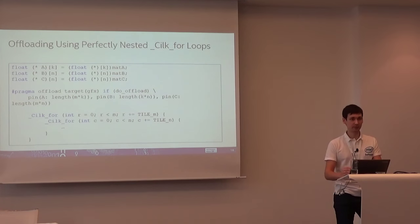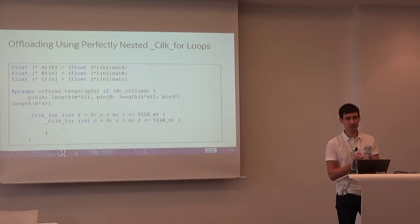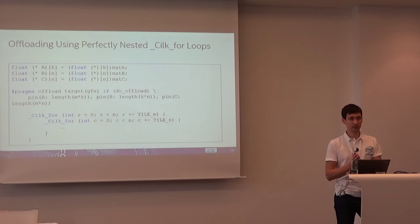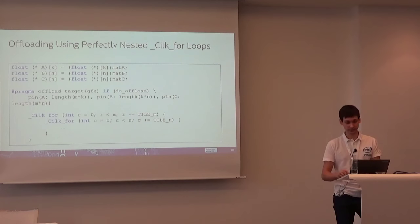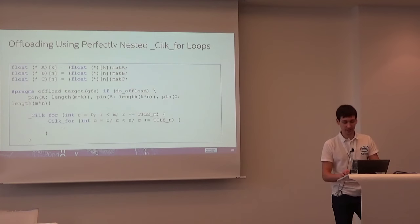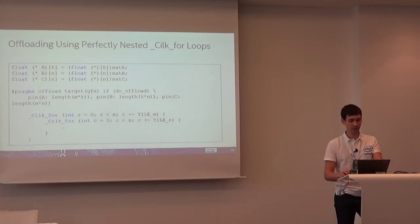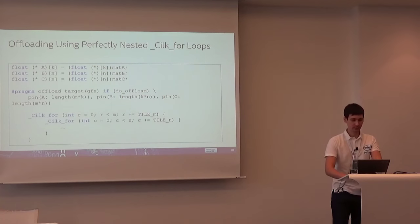Here is an example with perfectly nested cilk_for loops. The compiler will collapse these loops and we have a two-dimensional iteration space. Each thread will be assigned a two-dimensional iteration space chunk. The arrays a, b, and c are defined as pointers to arrays, and when doing a pin, we need to set the length — that is important.